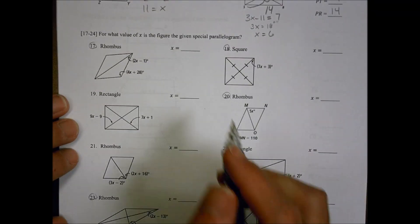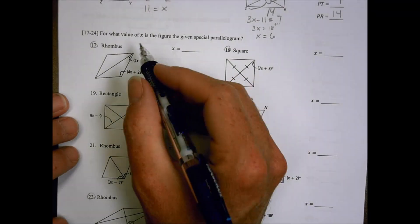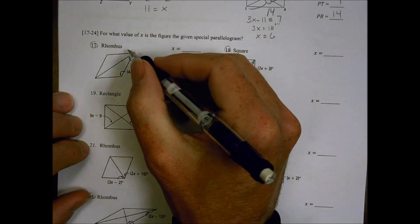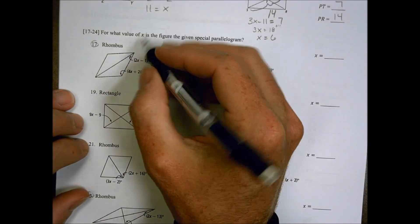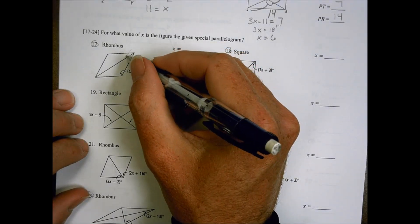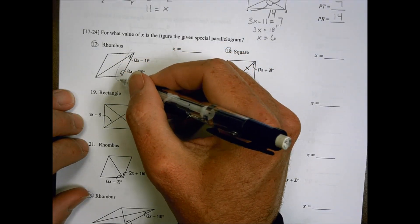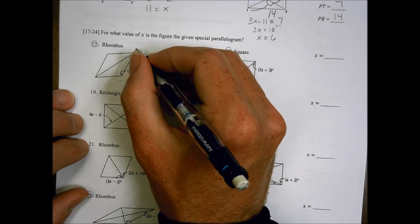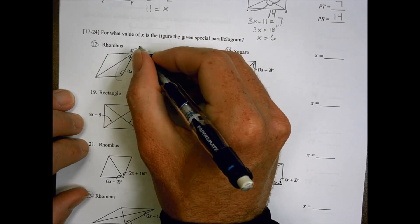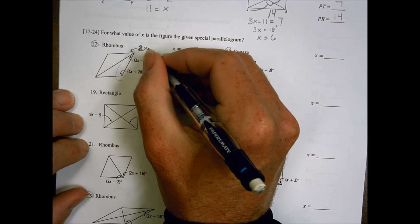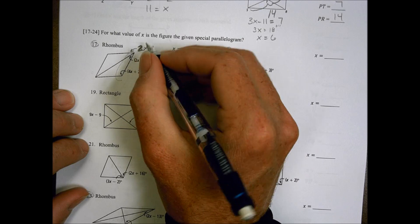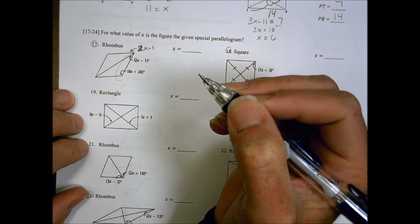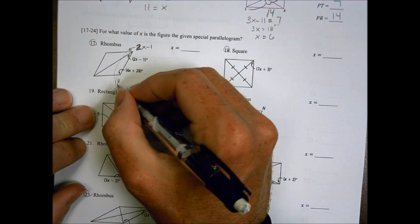Number 17. Find the value given the special parallelogram. So we have a rhombus here. So with this rhombus, what's interesting is, I know that the consecutive interior angles are going to be equal to 180 degrees. But I'm only having part of that. This is the bisector, which means that if that's 2X plus 1, then this measurement is also 2X minus 1. So this, and this, and this, will all add together to be 180 degrees.